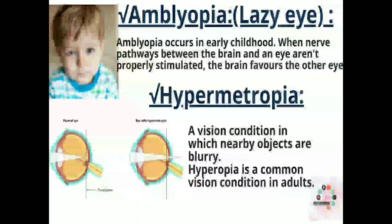Next we have amblyopia, also called lazy eye. As you can see in the picture, it occurs mostly in early childhood when nerve pathways between the brain and eye are not properly stimulated; the brain favors the other eye, causing this condition.